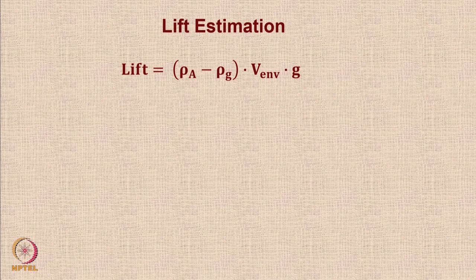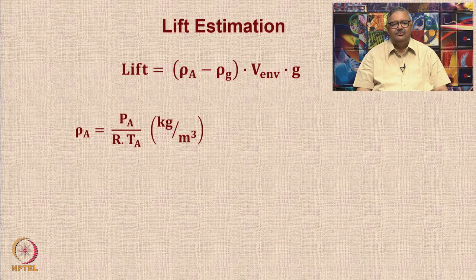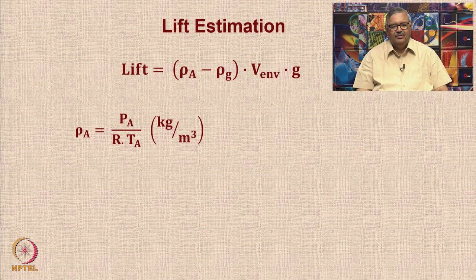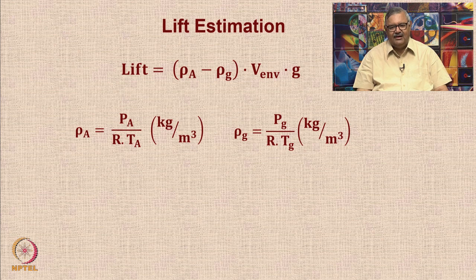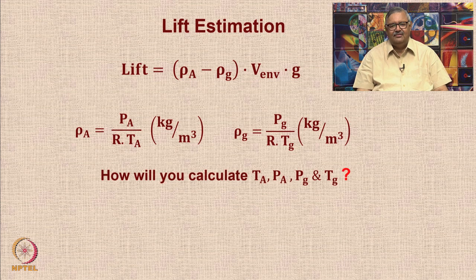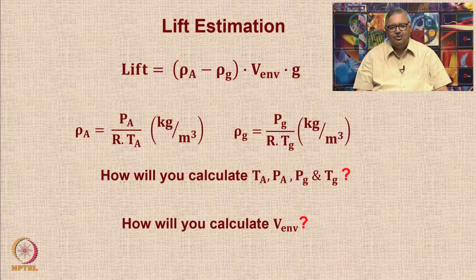Let us see how to estimate the lift generated by a hot air balloon. The simple formula is: lift equals the difference in density between the ambient air outside and the gas inside, multiplied by the envelope volume and g. The density of ambient air rho_A equals the local atmospheric pressure P_A divided by R times T_A, giving kg per cubic meter. Similarly, rho_G equals P_G divided by R times T_G for the lifting gas density. You also need to calculate the envelope volume from pure geometry.